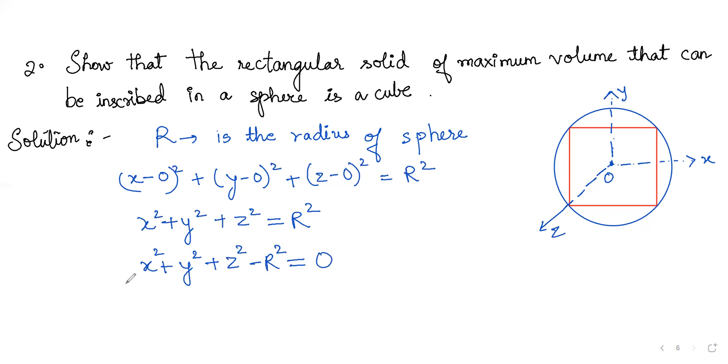We got a function φ(x,y,z) = x² + y² + z² - R² = 0. We have this constraint function.